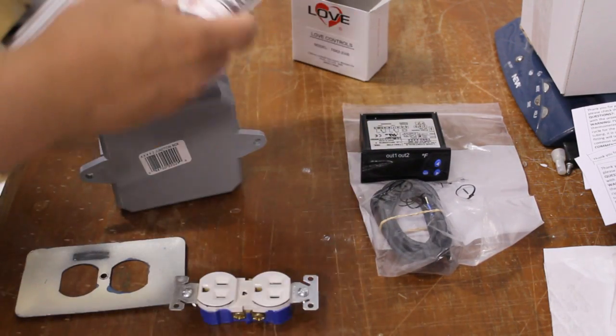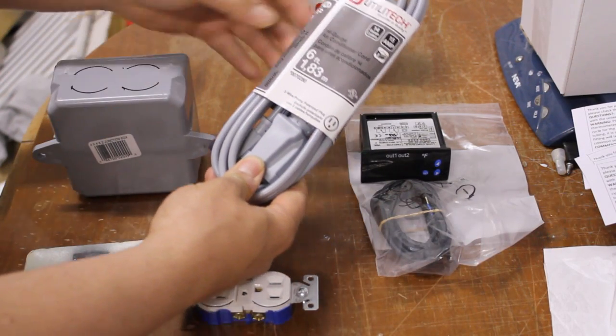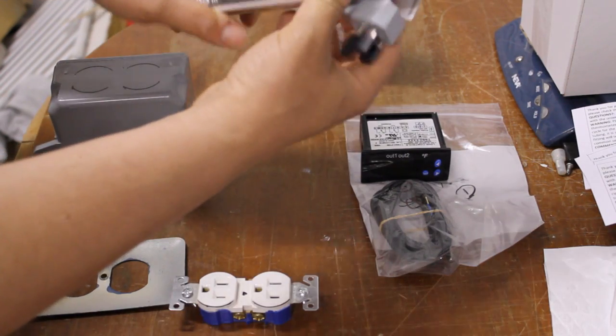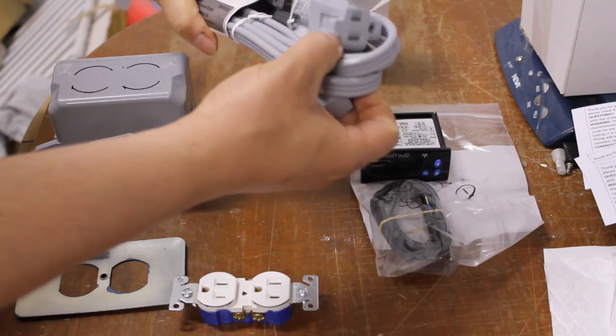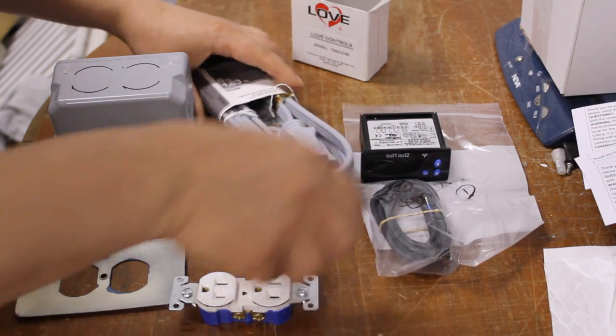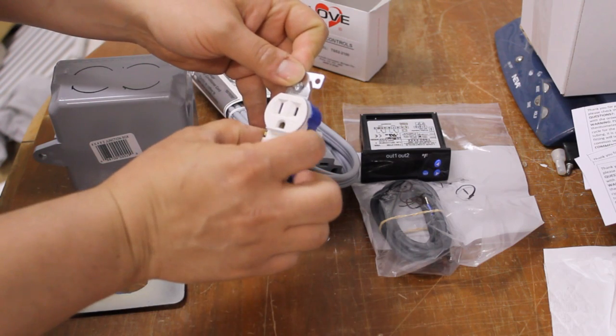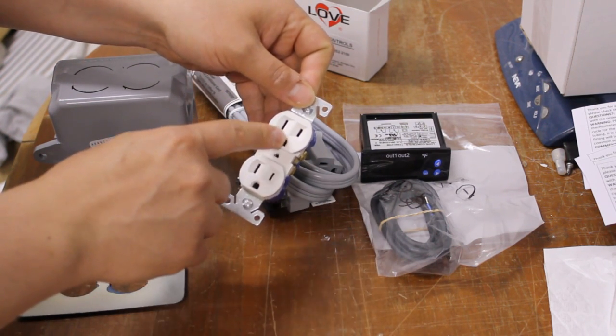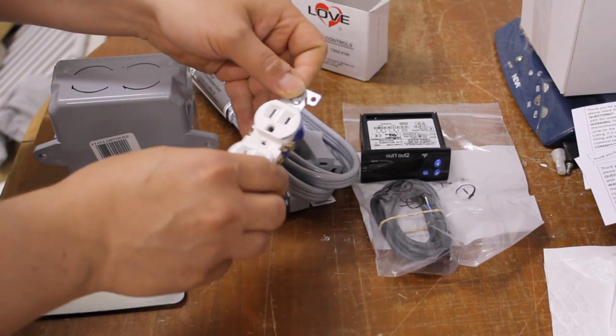I went to Lowe's, I got myself a 14-gauge air conditioner extension cord. I wanted it to have this angled plug on here, and the plan is to just cut the female end off and wire it right into the controller. Also I wanted to have a duplex receptacle where I'm going to disconnect the bridging here so that one of the receptacles or outlets is for the heater and one is for the refrigerator.